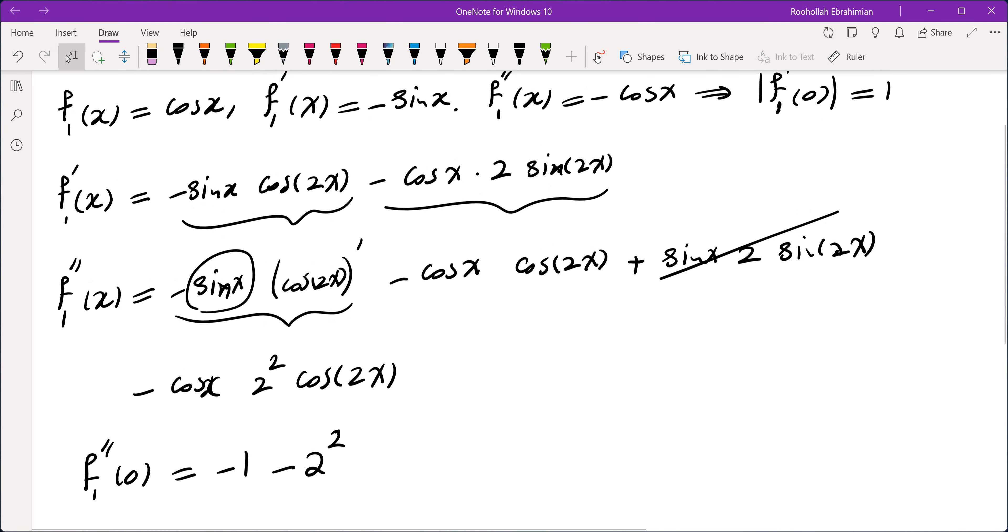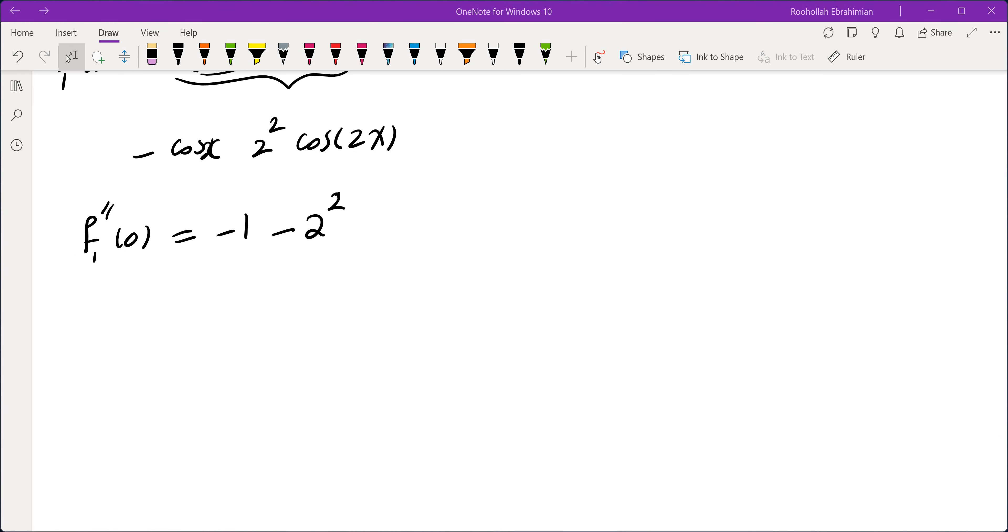So we kind of see the pattern now. When we take the derivative, we'll have to keep differentiating different terms. Most of the terms are going to have a sine, which means they are going to be 0 when you plug in 0 for x. So perhaps the best way of articulating that would be using Taylor series.